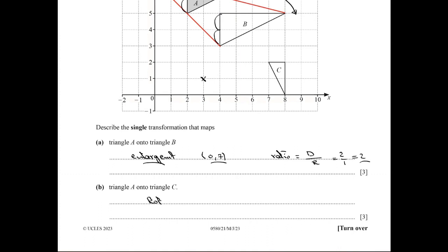Three marks for the word rotation, with angle 90 degrees clockwise, and the center is three and one. Thank you.